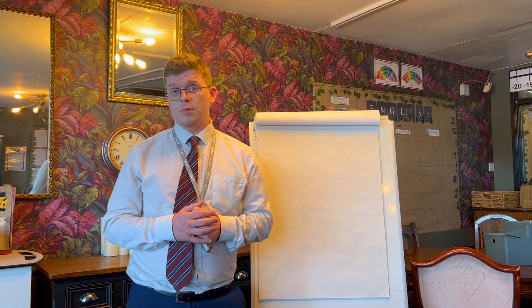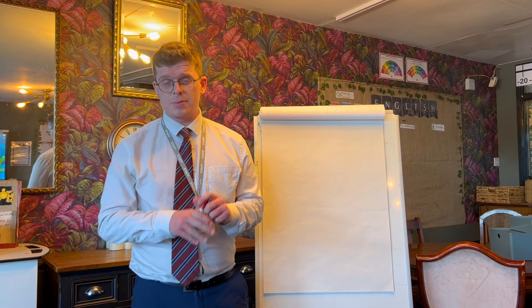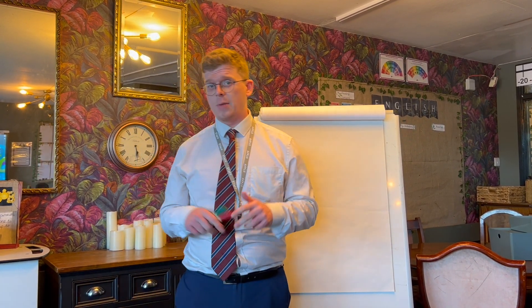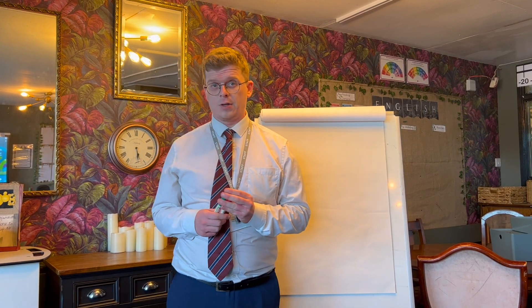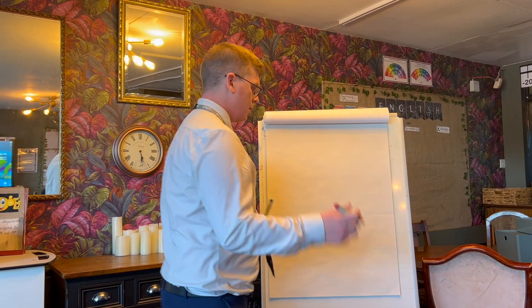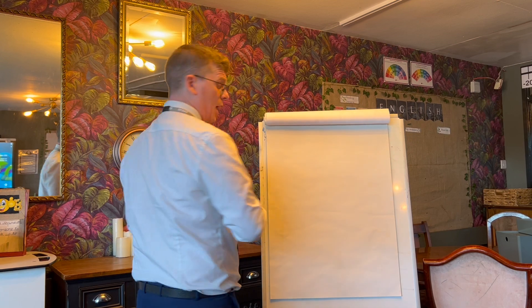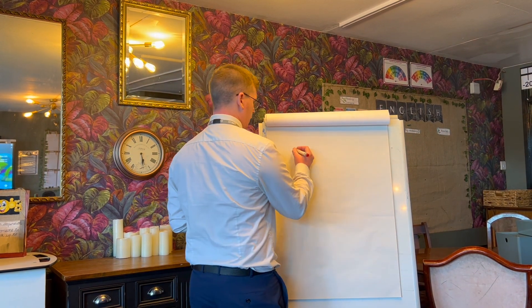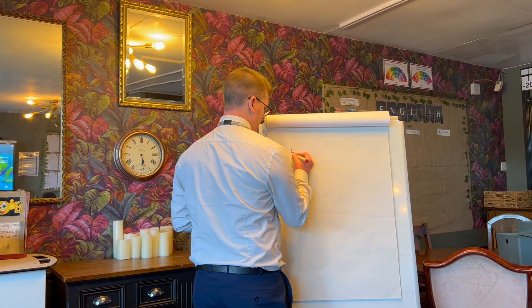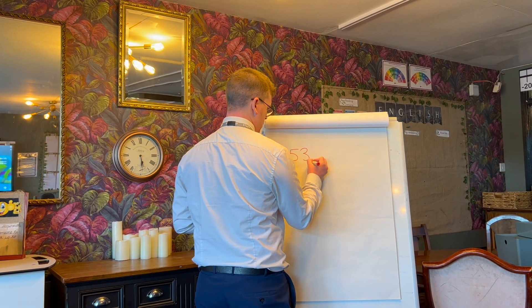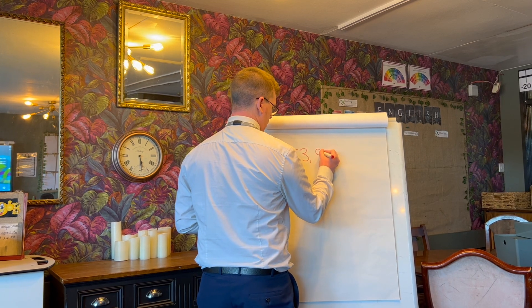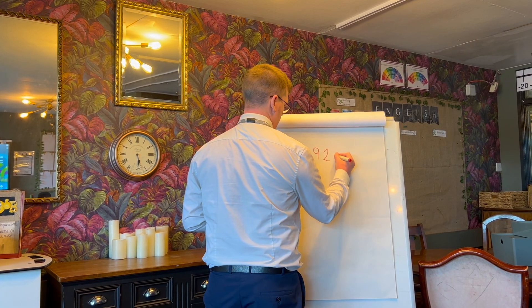Our main focus is going to be on rounding. You may have already done a bit of rounding before, but this is going to take it to that extra step here in Year 5. I'm just going to spend a couple of minutes going over an example of rounding on the flip chart here. So let's say I have a five-digit number of 53,924.